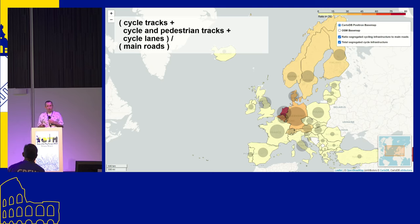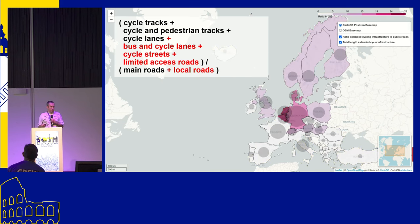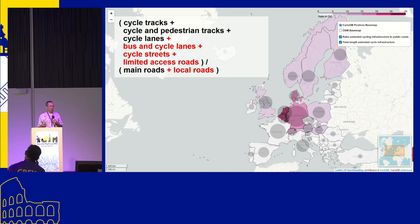This was already in the first edition that Eleanor worked on, and we've received many comments that we should include something else. We've done some experiments, trying to put all different types of infrastructure together and also comparing whether local roads are suitable. The results are interesting, but it's not improving any of the correlations we're really interested in.